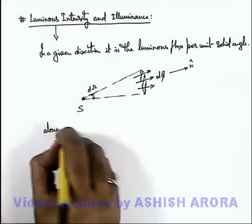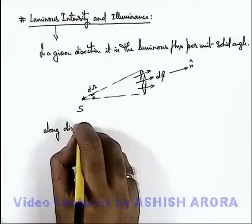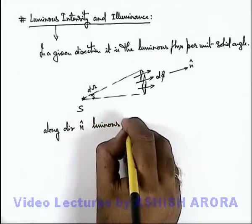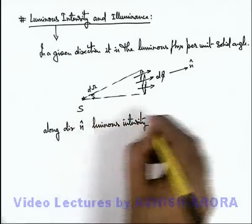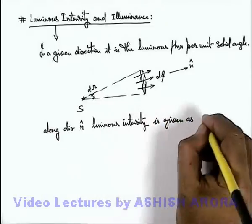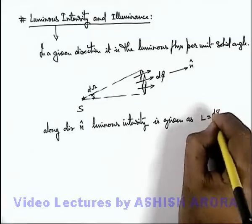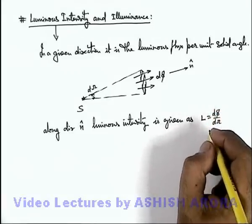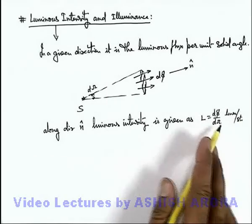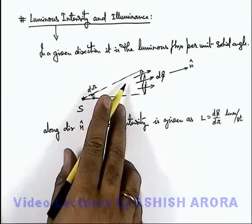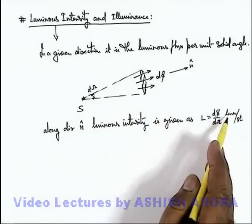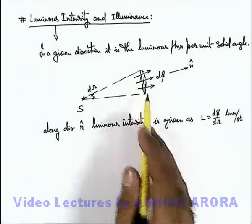Then we can say if this is the direction n cap, along direction of unit vector n cap, luminous intensity is given as: luminous intensity is defined as L, and the value will be dφ over dΩ. That will be written as lumen per steradian, because per steradian this much amount of luminous flux is passing. Per unit steradian, this is the flux which is passing through the solid angle.